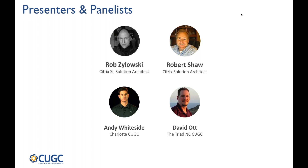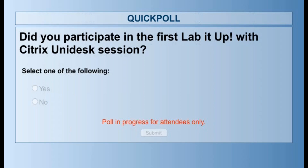We have a quick poll question. If you either participated in part one or were able to watch the video from part one, indicate yes; if you did neither, indicate no. This way Rob and Robert have a good idea of who's online and what they need to cover. We're certainly going to do a high-level overview of part one, but if there are a lot of no's, we may dig a little deeper.